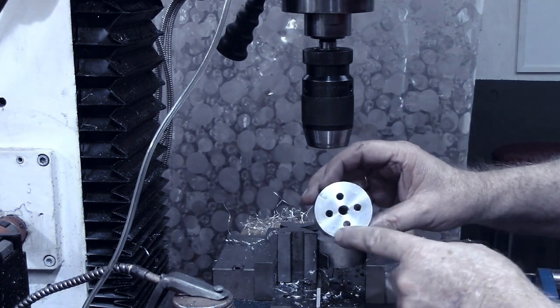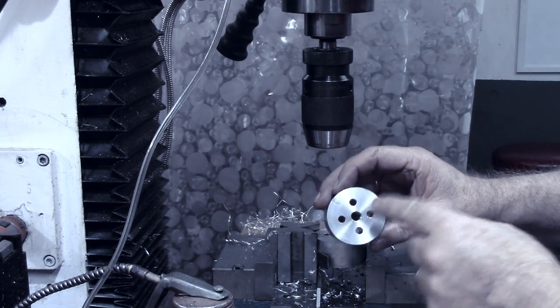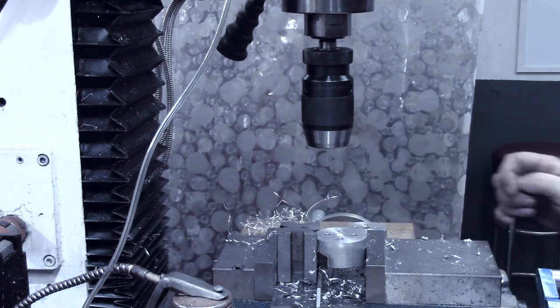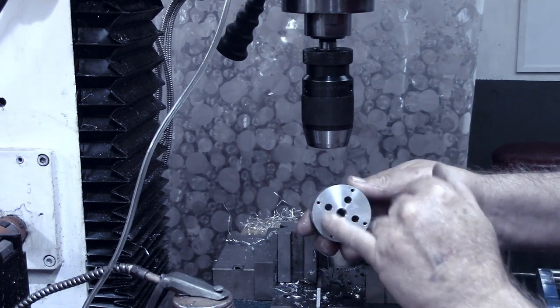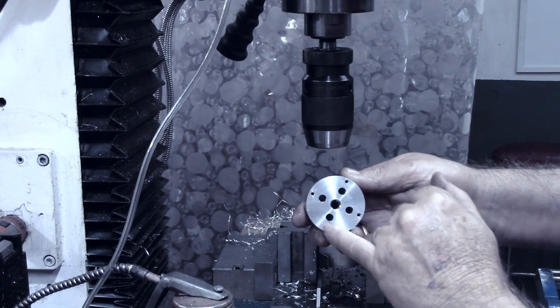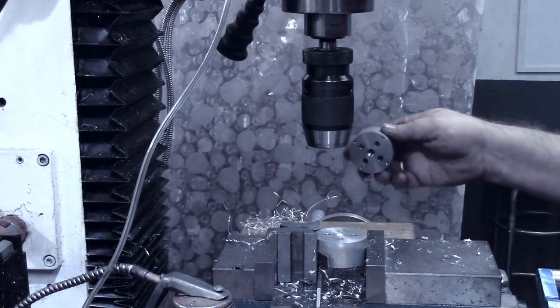All right, what we have now is four holes, four quarter inch holes drilled in there that the air will pass through. Next thing we're going to do is drill and tap four holes for 6-32 screws to hold the bottom onto this.